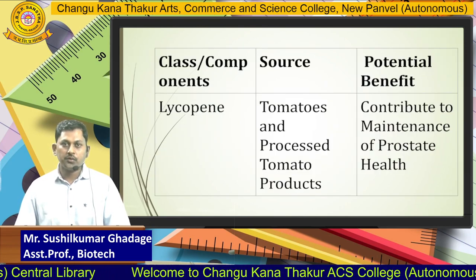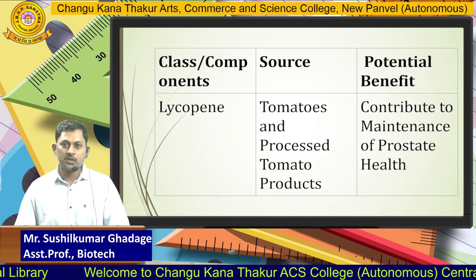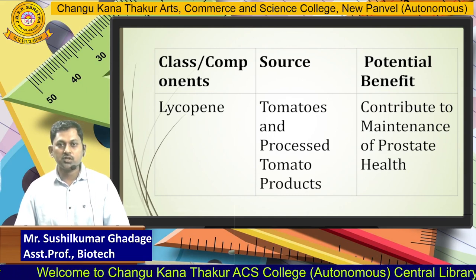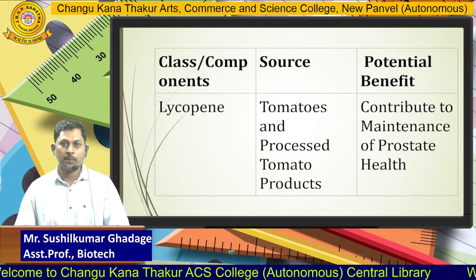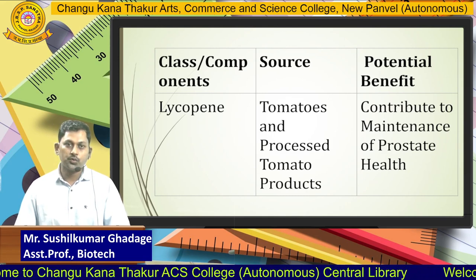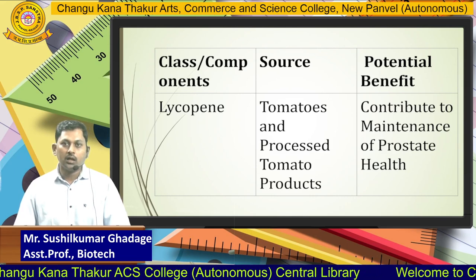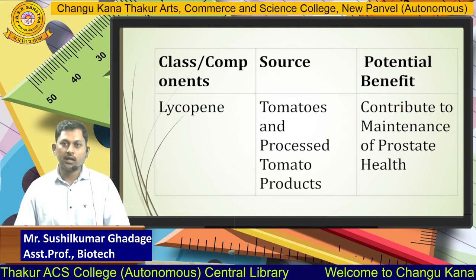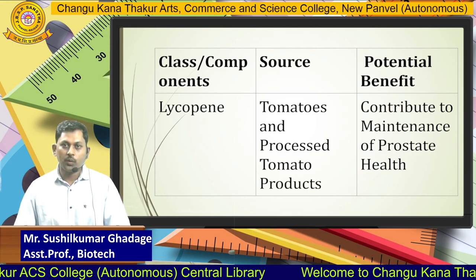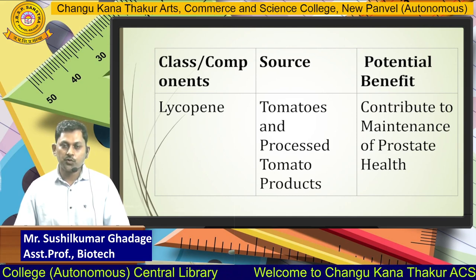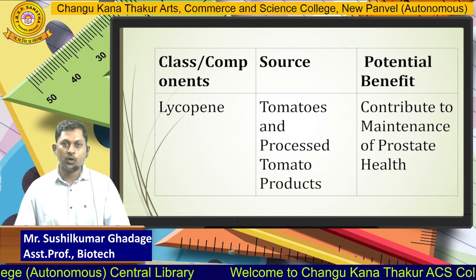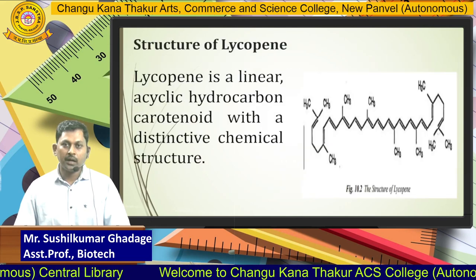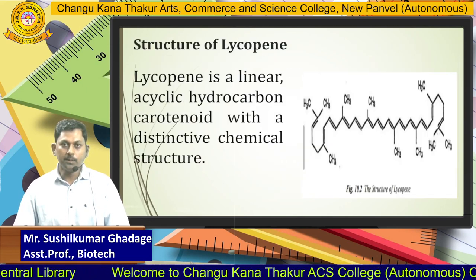Tomatoes and processed tomato products are the most important source of lycopene. Among its potential benefits, lycopene contributes to the maintenance of prostate health.